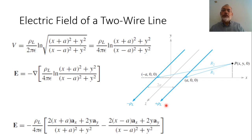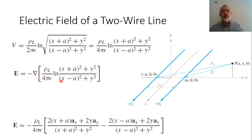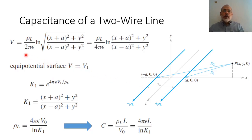If we are interested to find the electric field between the two line charges, we can obtain the electric field as E = −∇V. The gradient gives the derivative with respect to x in the x-direction plus the derivative with respect to y in the y-direction, yielding the electric field at any point due to these two infinite line charges.